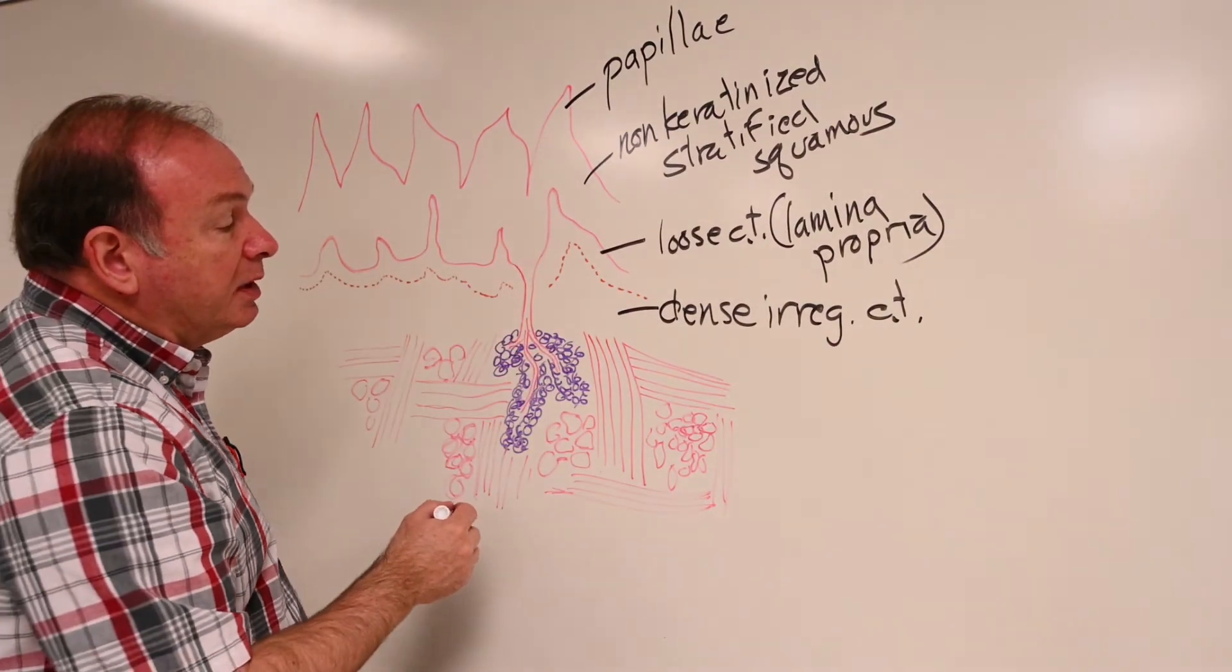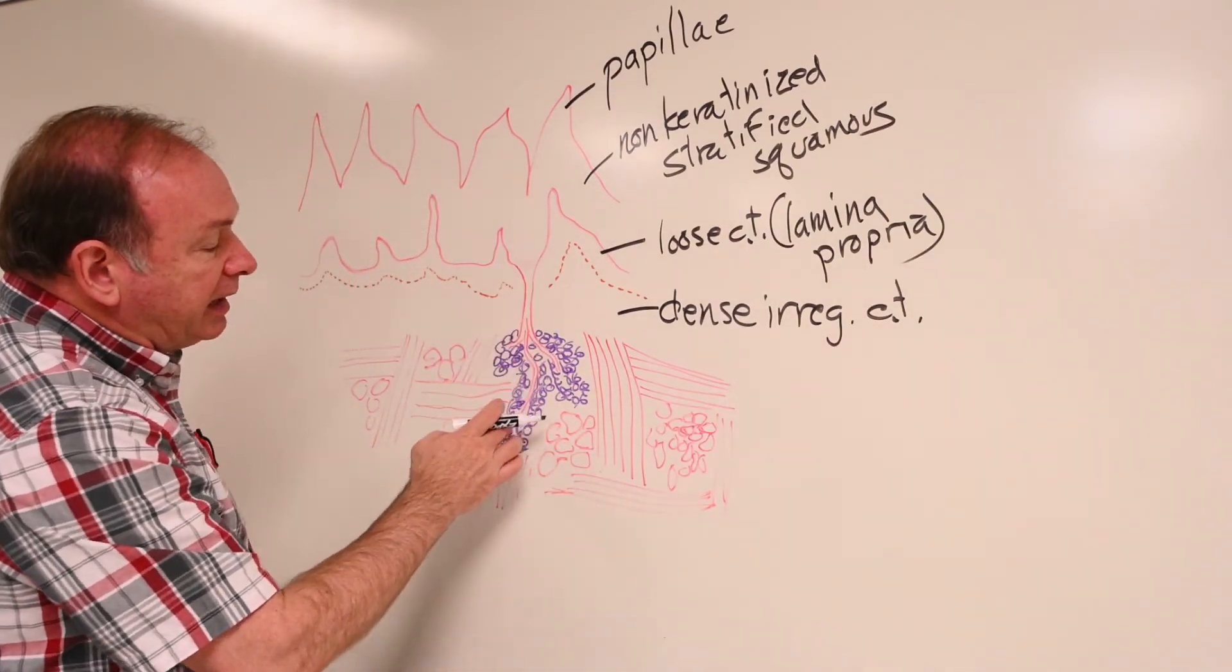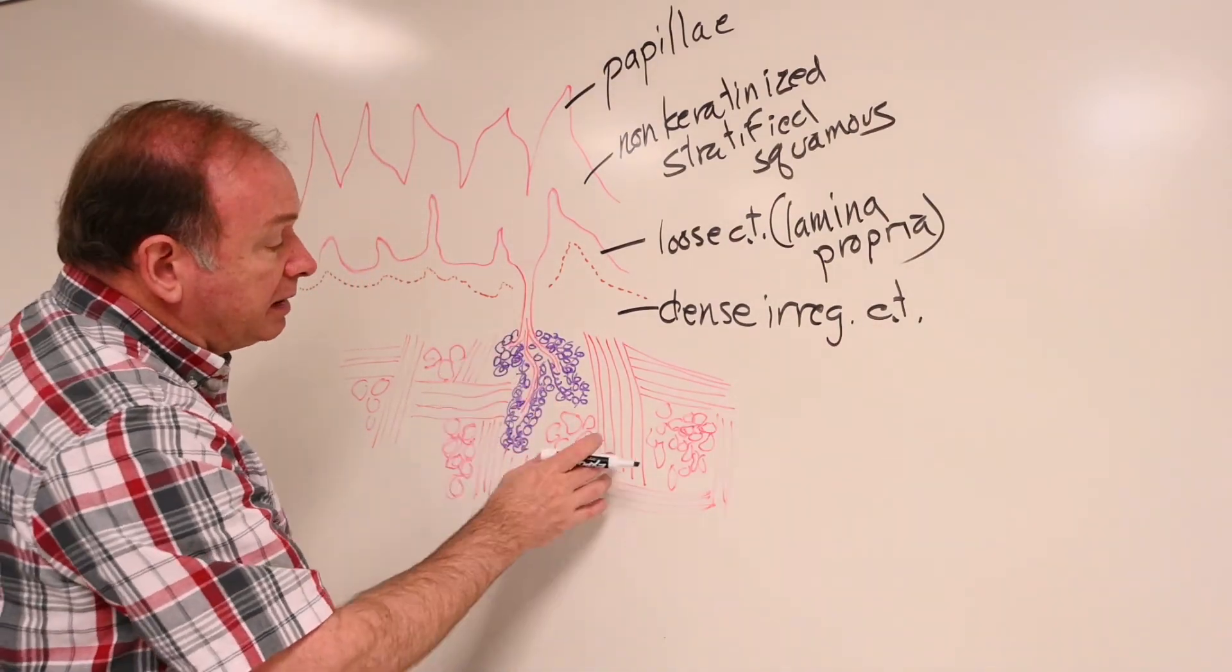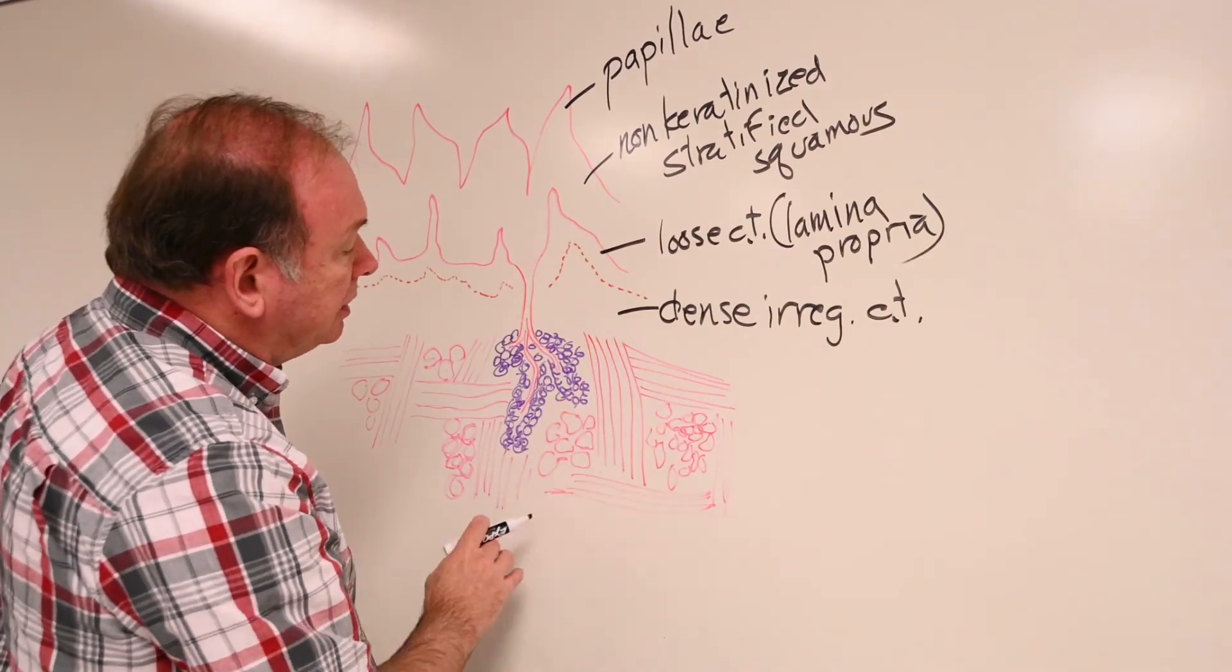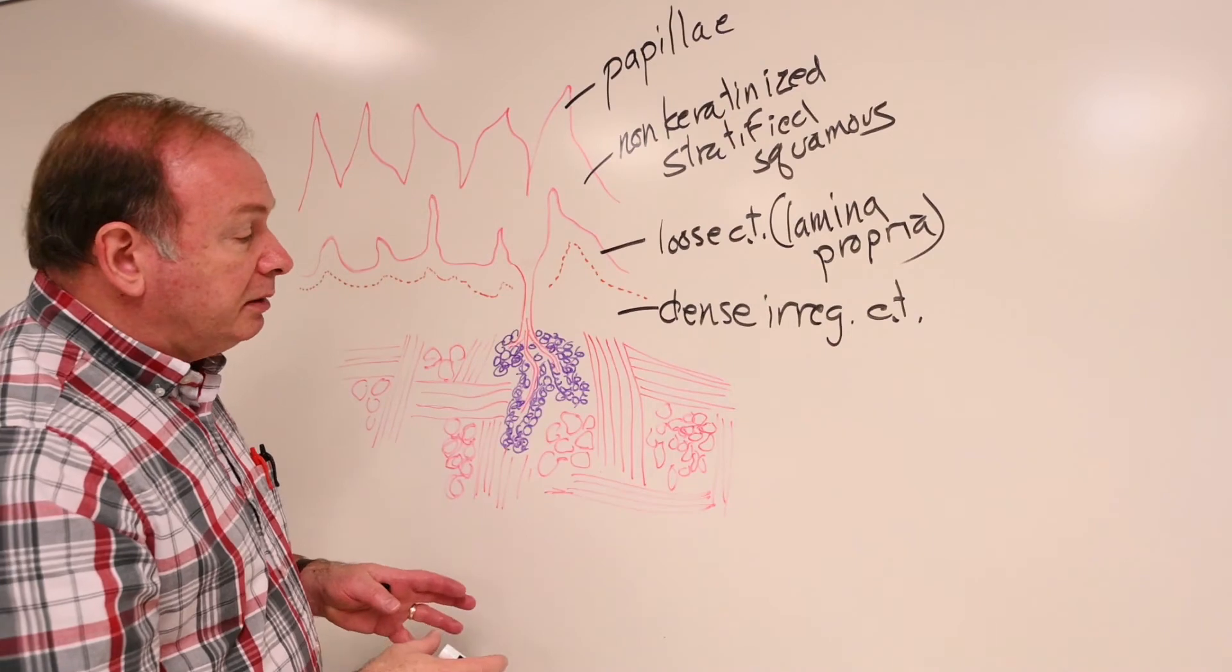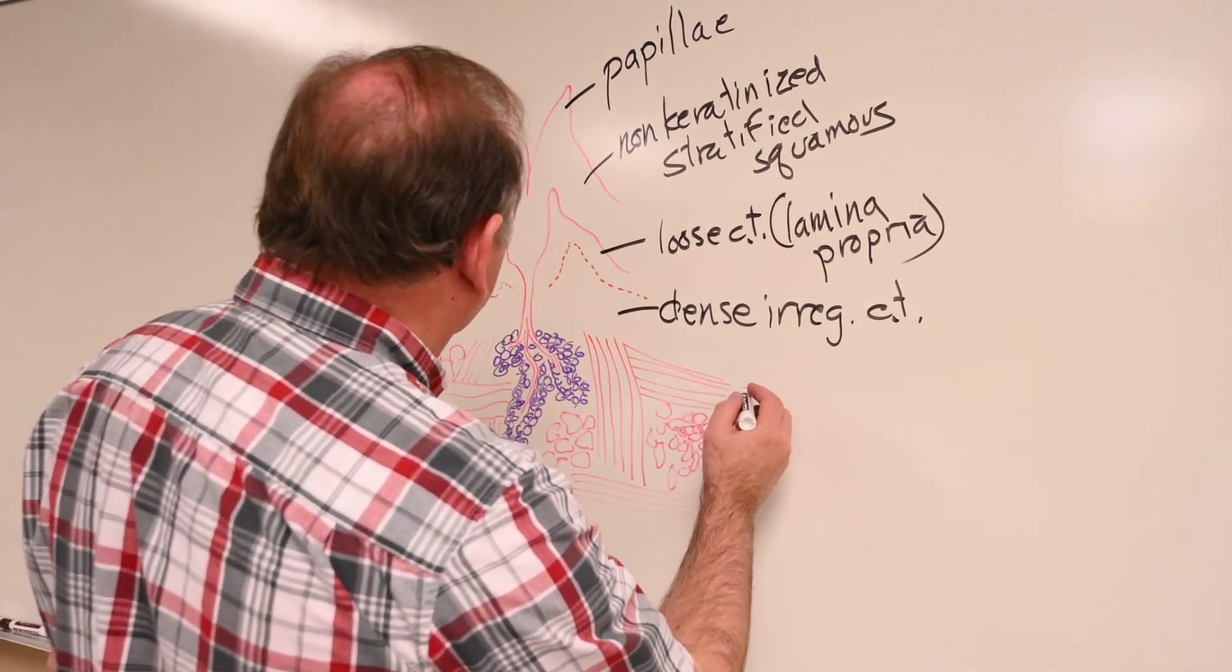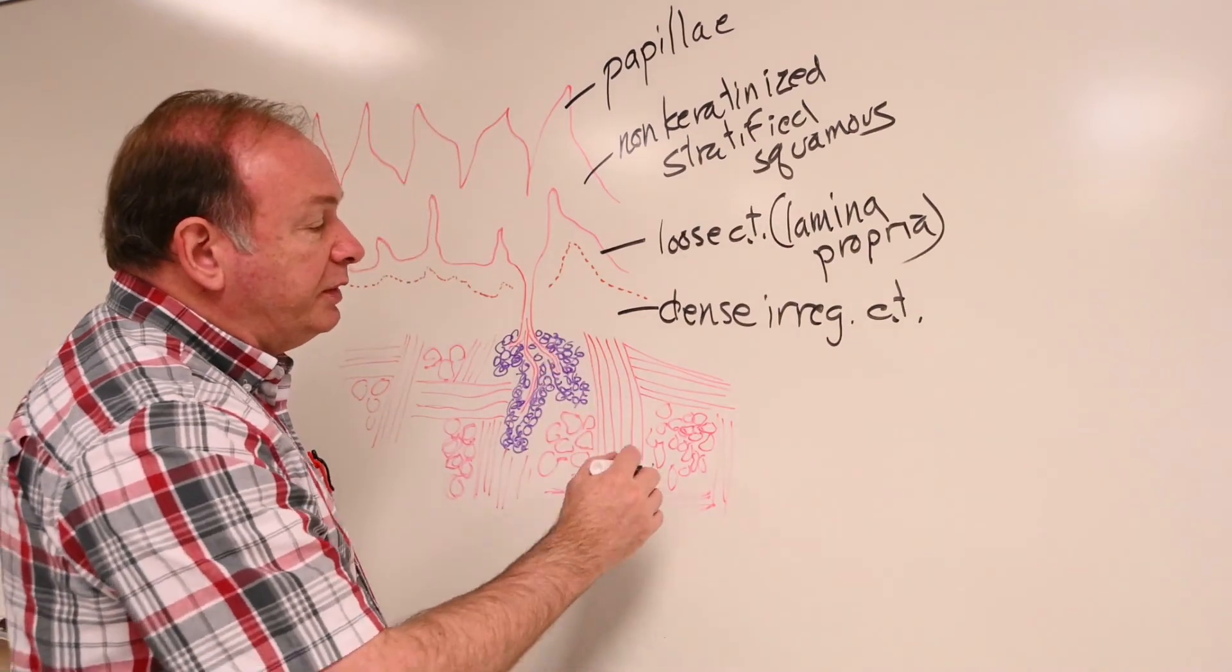...you hit this layer that consists of salivary glands, muscle tissue, a lot of connective tissue in between things, a lot of adipose, nerves, vessels, all that going on here. So, this is the deep tissue of the tongue.